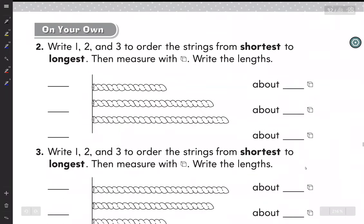On your own. Write 1, 2 and 3 to order 3 from shortest to longest. Then measure with the ones. Write the length. So number 2 here. We can see that it is 1, 2, 3 in order. Ascending order.